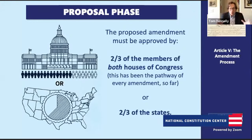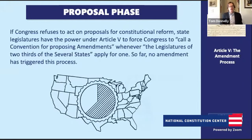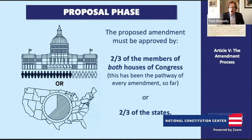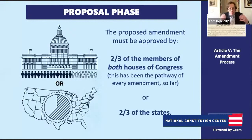We also have a second method for proposing a new amendment. If two-thirds of the states get together in their state legislatures and call on Congress to call a convention for proposing amendments, Congress must do so. The states themselves can work around Congress and force Congress to call a new convention. That convention will then possibly come up with a set of reform proposals — a set of amendments — that again would go to the states for ratification or approval.